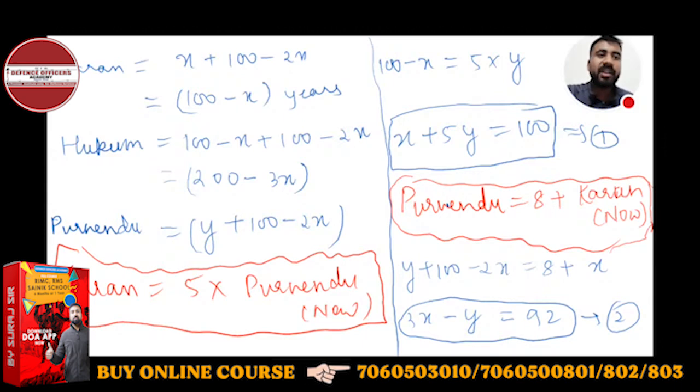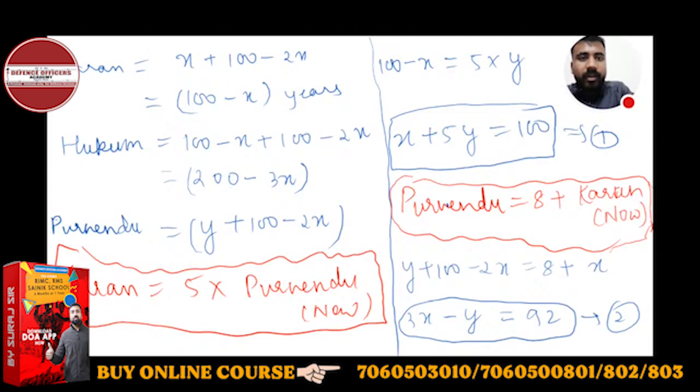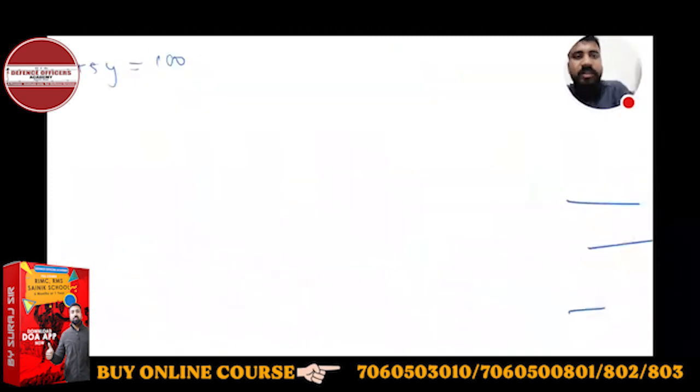From these two equations, we have to calculate the value of X and Y. Now we have two equations and we have to find two variables. So let me write these two equations. Equation 1 is X plus 5Y is equal to 100. And what is the second equation? The second equation is 3X minus Y is equal to 92. Let's solve these two equations now.